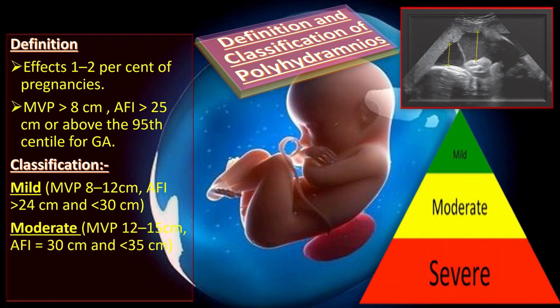In moderate polyhydramnios, the maximum vertical pool is 12-15 cm and the AFI is 30 cm to less than 35 cm. In severe polyhydramnios, the maximum vertical pool is more than 15 cm and the AFI is 35 cm or above.